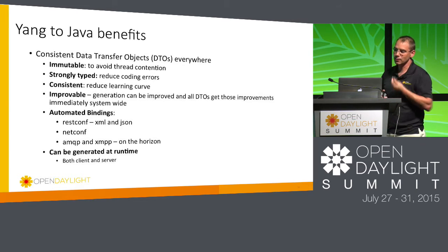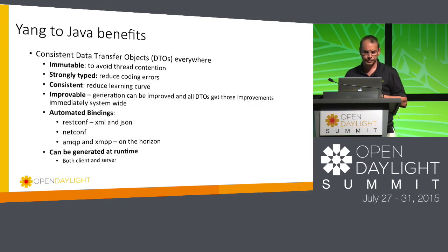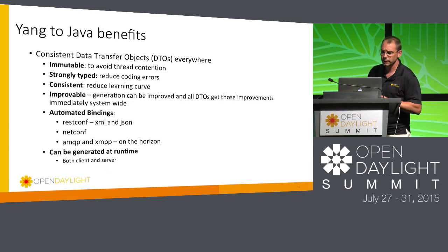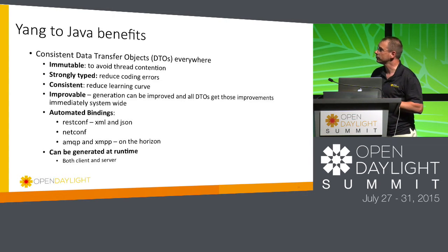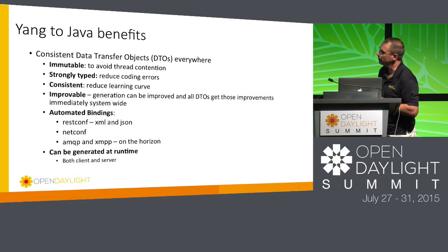Yang to Java is cool because it has these properties: consistent translation, and it handles certain things automatically. The generated code is immutable, with strongly typed input and output. It's consistent because the compiler generates the framework, so you take out a lot of the human fat-fingering errors that previously occurred.